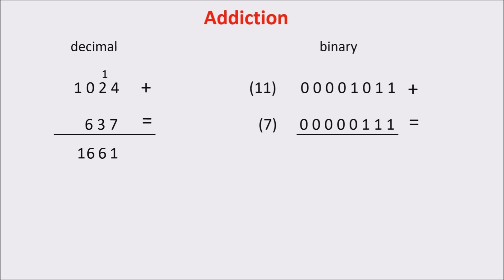In binary, the rules are the same, but we have only 1 and 0. We add the number 7 to the number 11. We start from the least significant bit. 1 plus 1 equals 2, or 10 in binary. So we exceed the base 2. So we write 0 and carry 1.